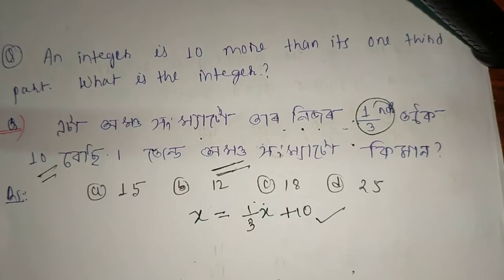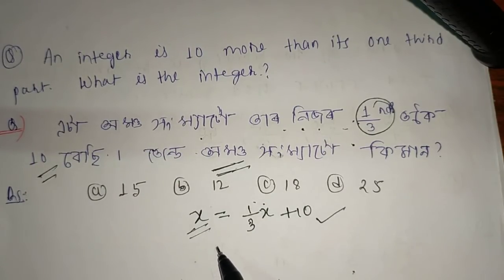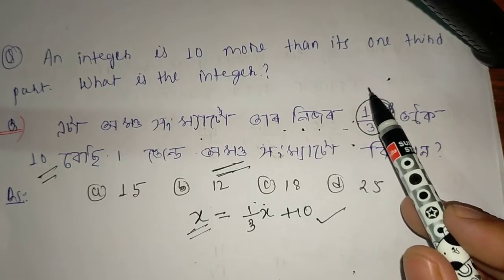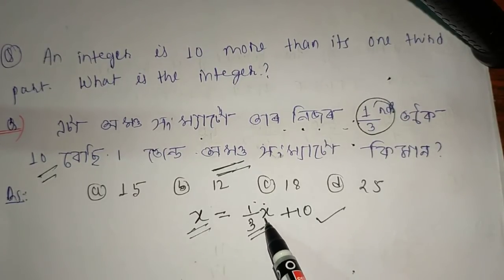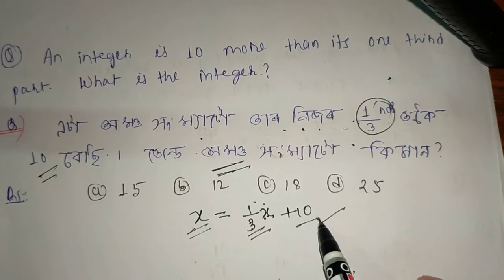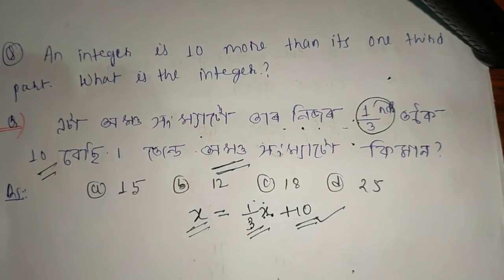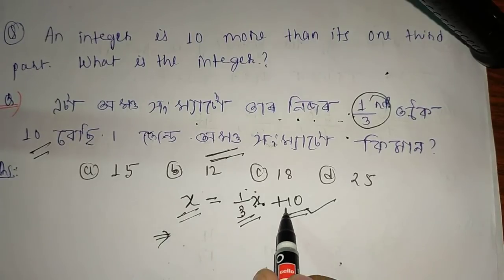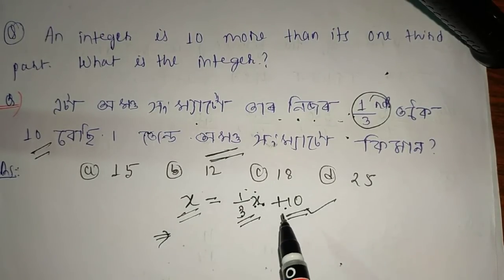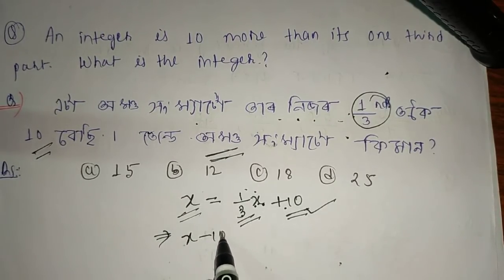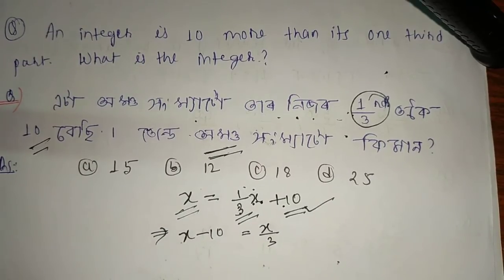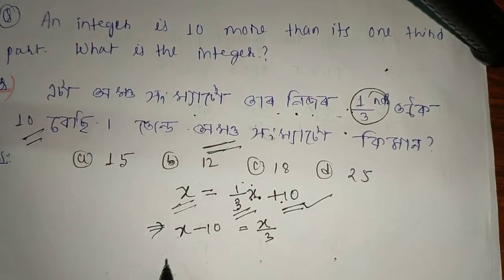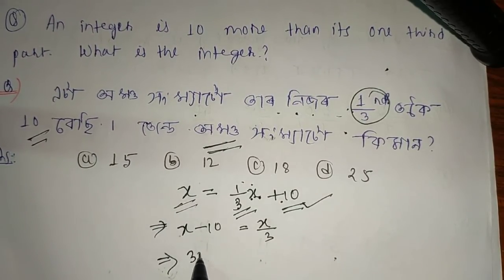We let the integer be x. The integer's 1/3 part is written as x/3. So x is 10 more than x/3: that means x = x/3 + 10. We take LCM and get x minus x/3 equals 10, then cross-multiply to get 3x minus x = 30.